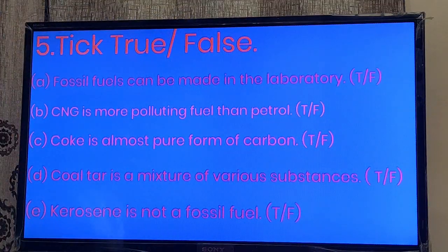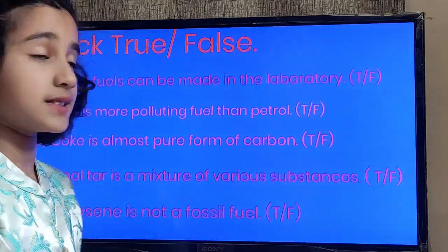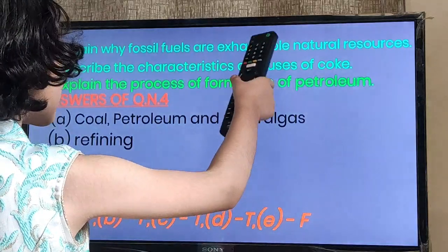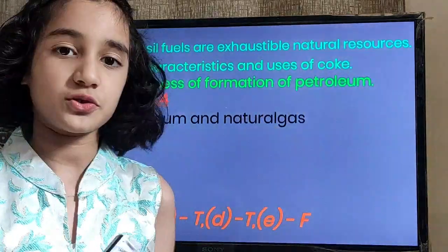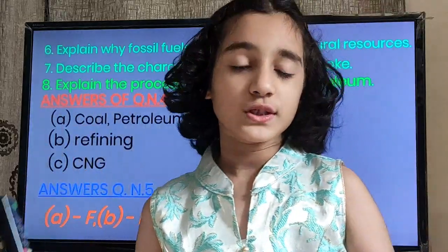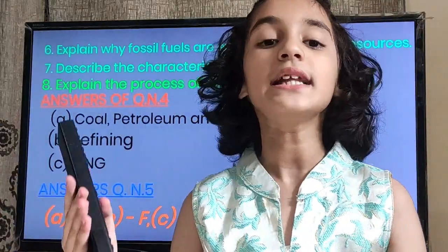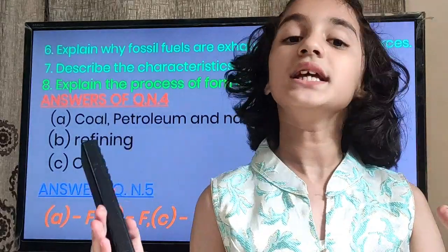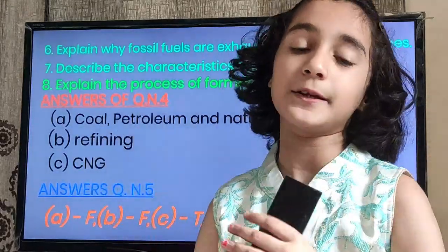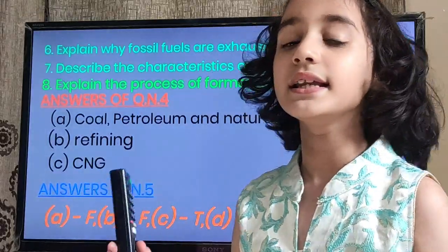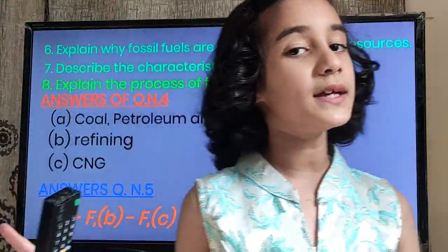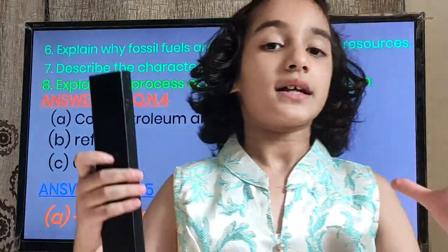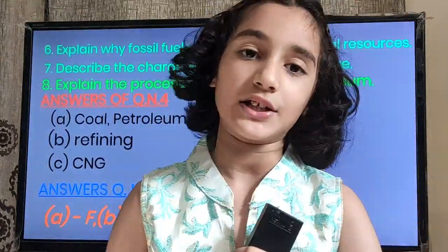Now we are going to do question number 6: Explain why fossil fuels are exhaustible natural resources. Fossil fuels are exhaustible natural resources because they take millions of years to be formed. They are limited in nature and cannot be replenished easily once consumed. Hence, they are considered exhaustible natural resources.